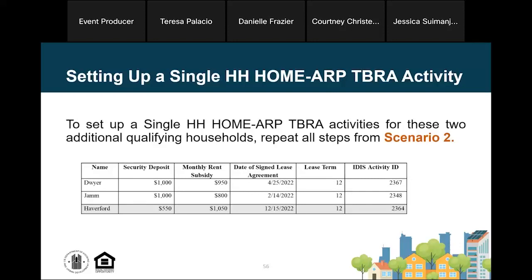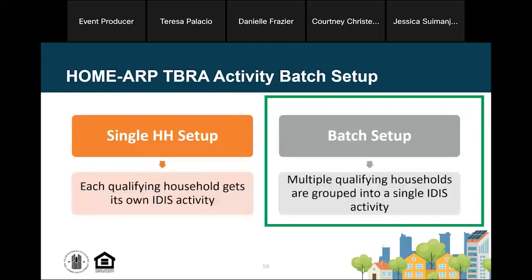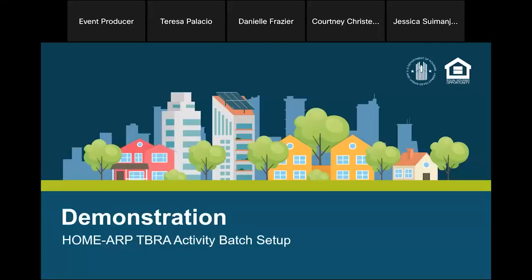Now it's been a few more months and Anytown has identified and executed lease agreements with two additional households — Dwyer and JAM. In the single household setup, we take these two additional households and set up one new activity for each household using the exact same process. Each household now has its own IDIS activity ID. But what if Anytown had decided to set up one activity with all three households? That would mean using the batch setup option instead of the single household setup option.